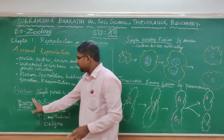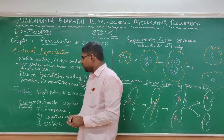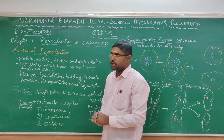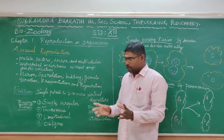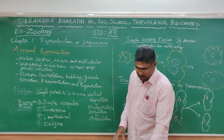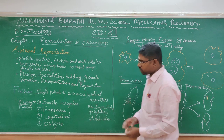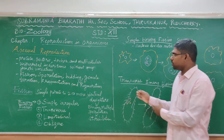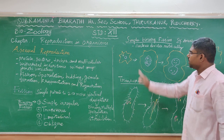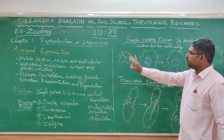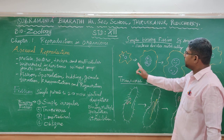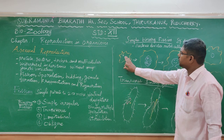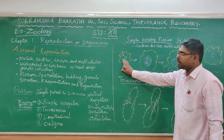That is why we call it Binary Fission. For example, Amoeba undergoes Binary Fission. In Binary Fission, a single individual — a single cell — divides to produce two daughter cells.